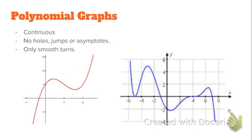So, a polynomial graph — a parabola as an example, even a line, cubic — all examples, all polynomials. They're going to be continuous, so that means you could graph it without picking up your marker, or pen, or pencil, or whatever writing utensil you're using.